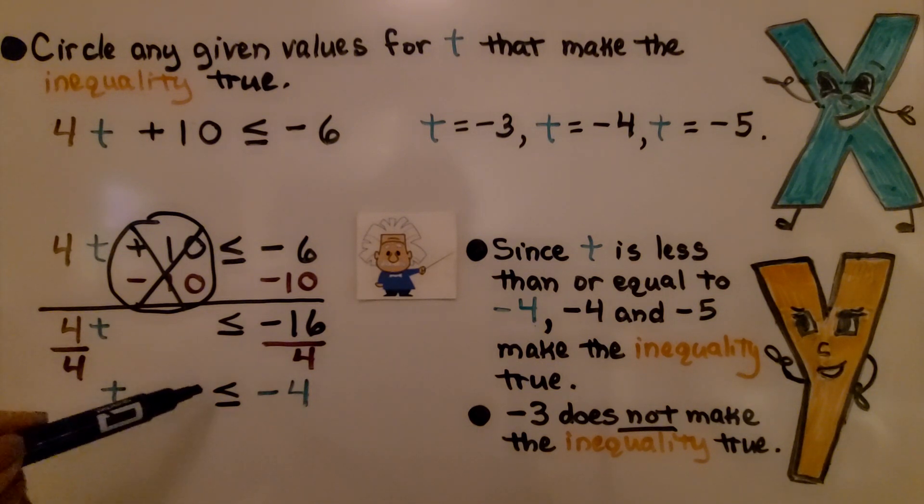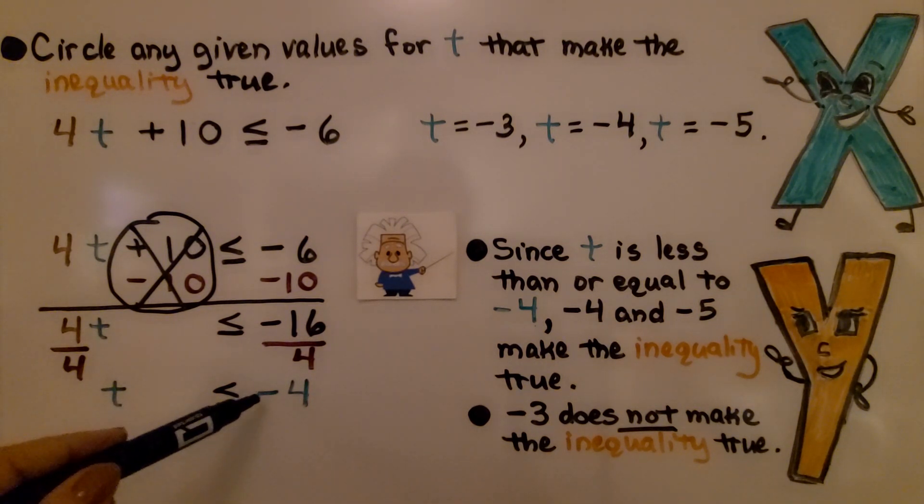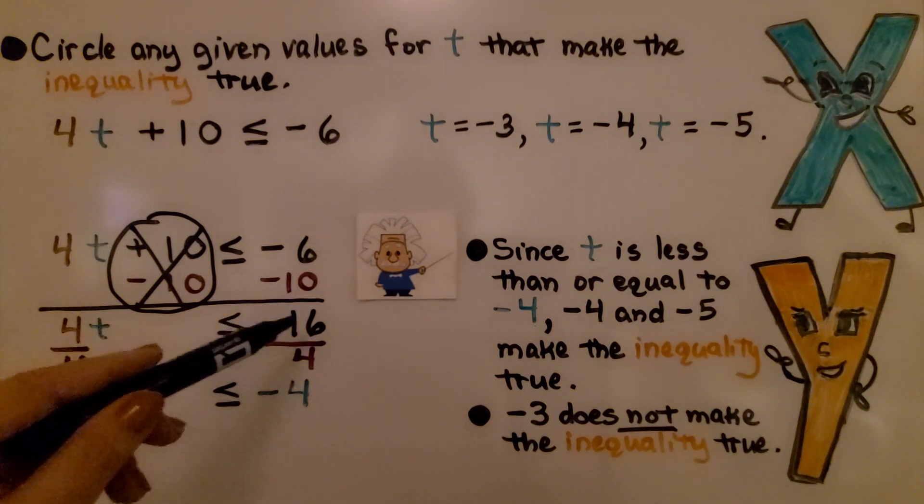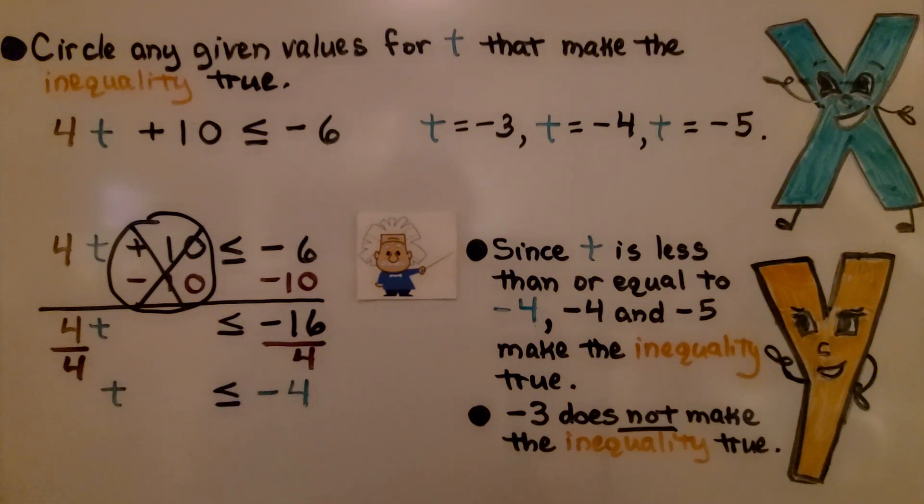So we have 1t is less than or equal to negative 4. We have a negative and a positive, so when we do negative 16 divided by a positive 4, we get negative 4.